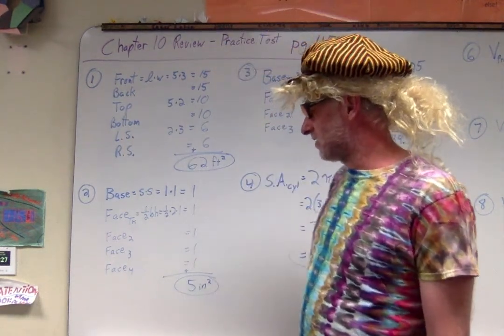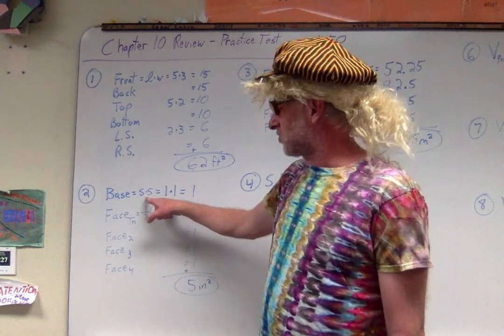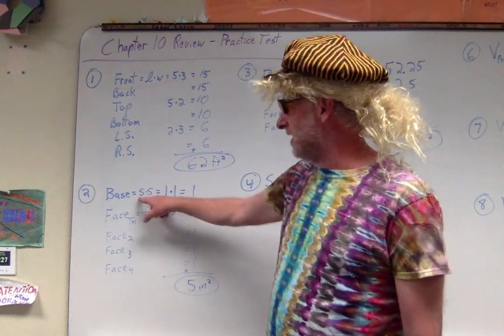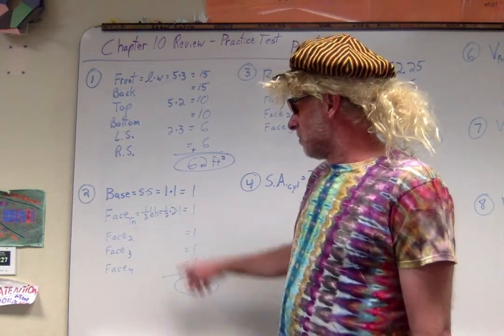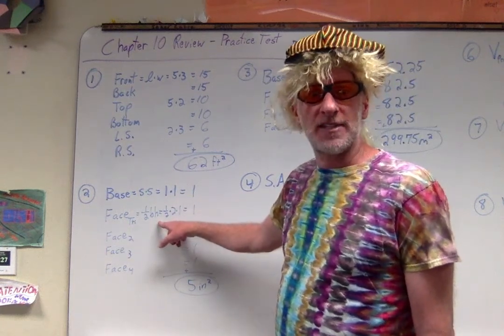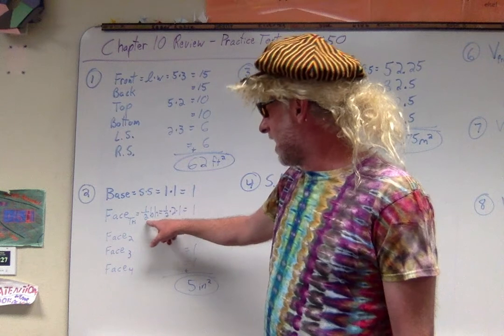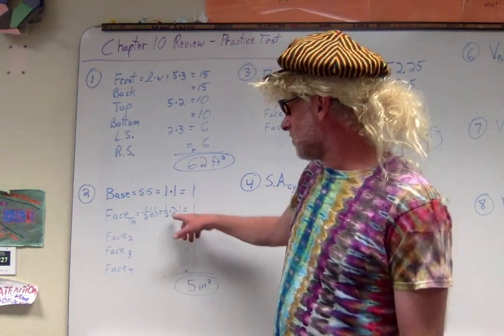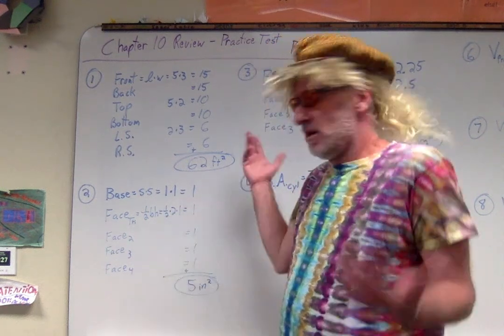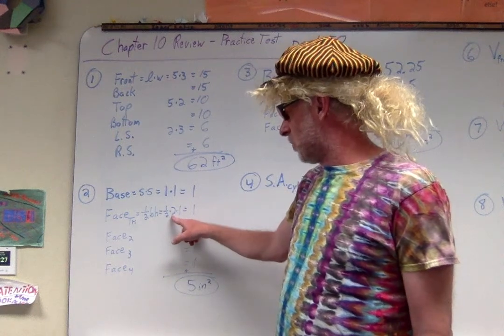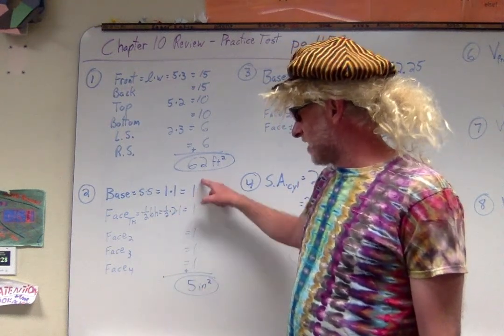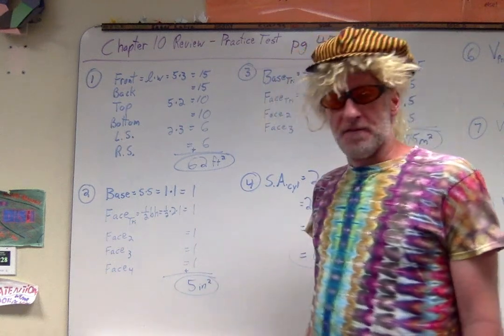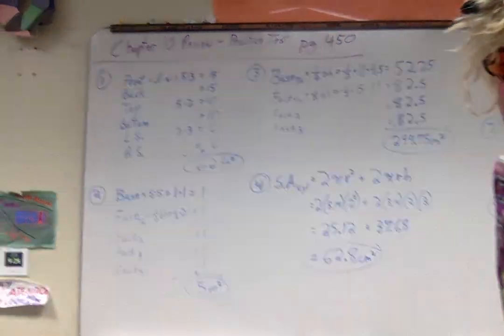Take a look at number two everybody. This guy must have been a square pyramid because the base was side times side, which was 1 times 1. But if it's a pyramid, all your faces are triangles: one-half the base times the height, one-half times 2 times 1. Well that's a 1 because half of 2 is 1, and 1 times 1 is 1. There's four triangular faces. Add them all up with that base: 5 inches squared.